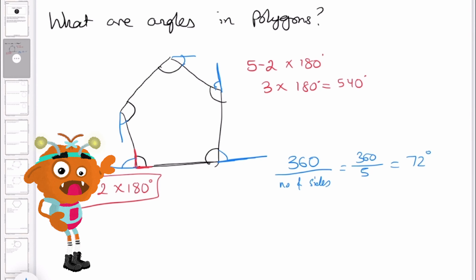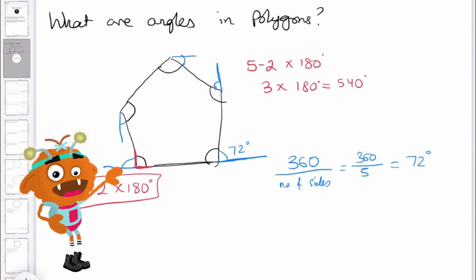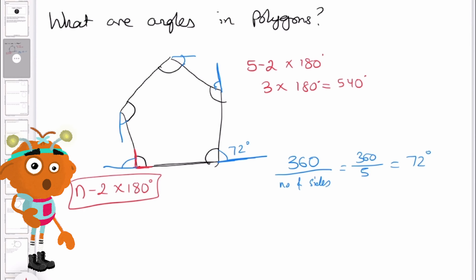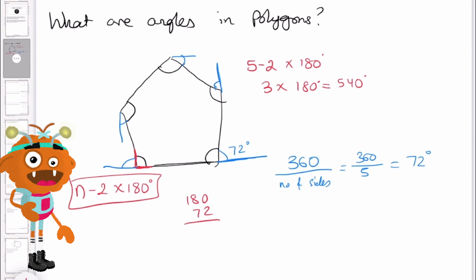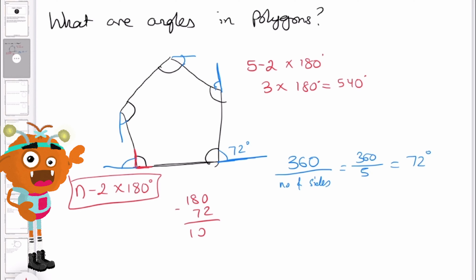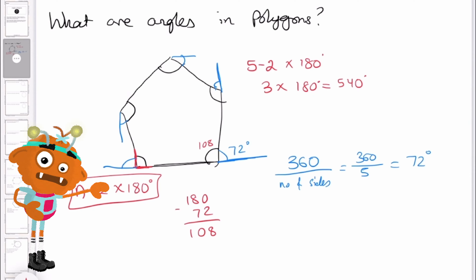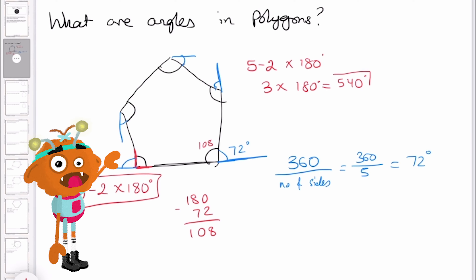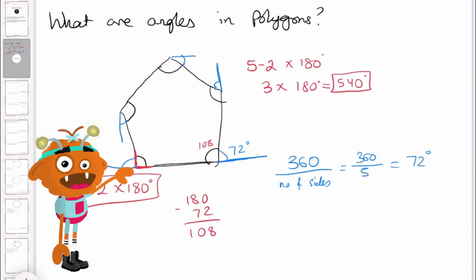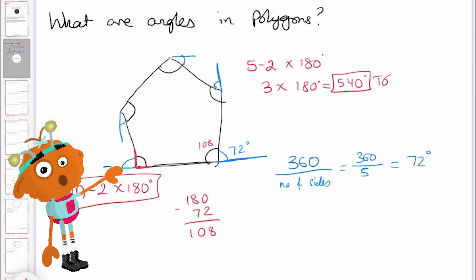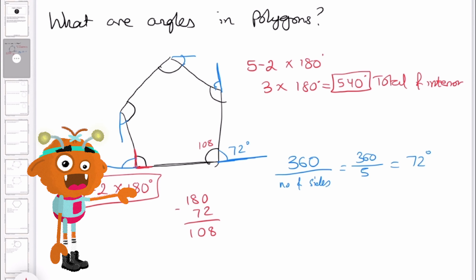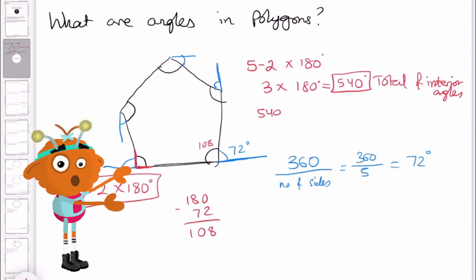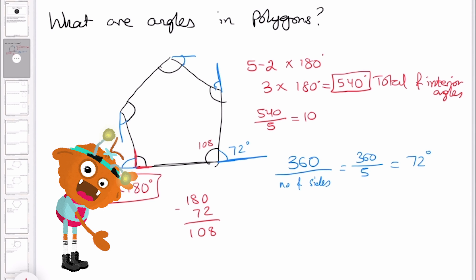In this case it's 360 divided by 5, which gives us 72 degrees. So if our exterior angle is 72 degrees, then our interior angle is 180 minus 72, which gives us 108 degrees. We can check this by taking the total of 540 degrees and dividing by the number of sides — 540 divided by 5 gives 108 degrees.